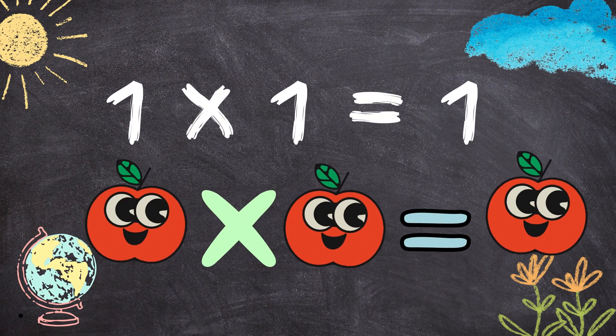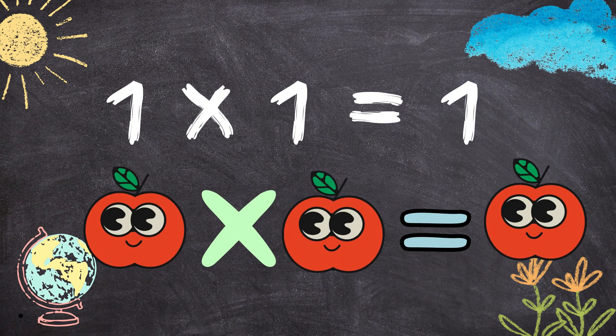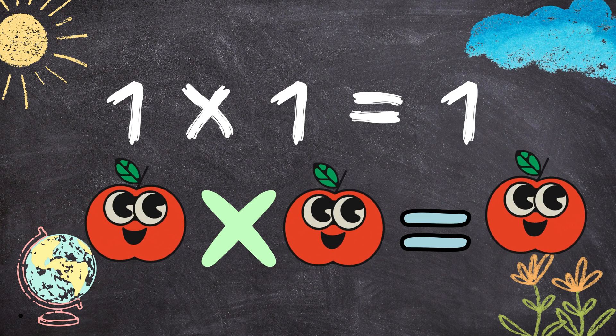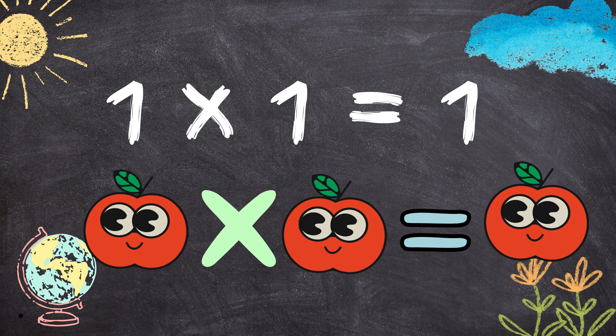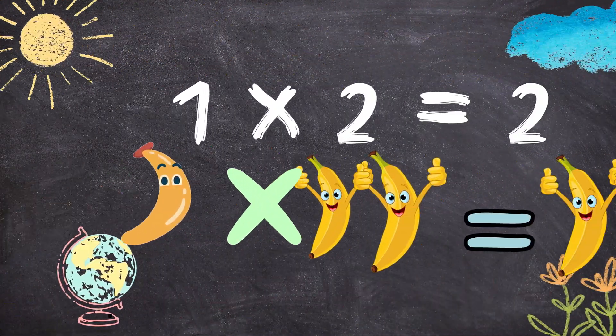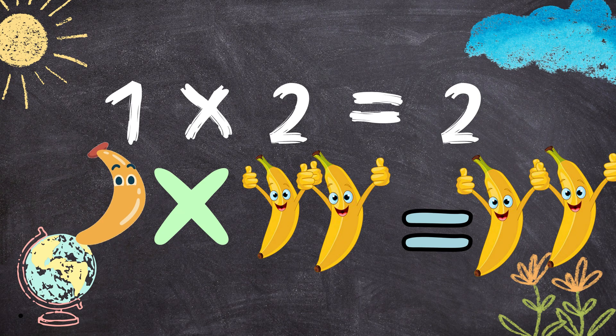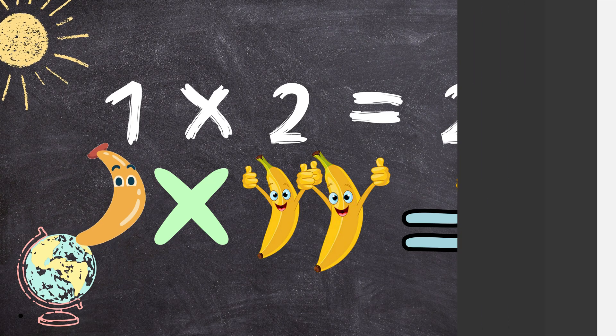1 multiplied by 1 equals 1. 1 apple times 1 apple equals 1 apple. 1 times 2 equals 2. 1 banana multiplied by 2 bananas gives you 2 bananas.